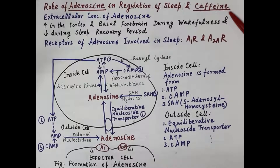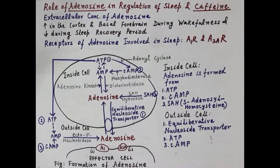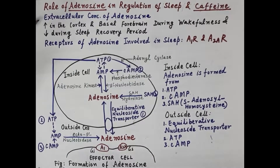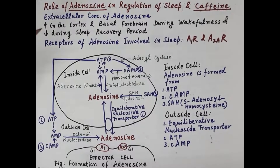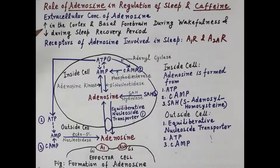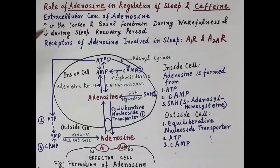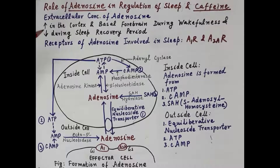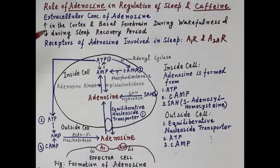We'll discuss how adenosine induces sleep and how caffeine induces wakefulness and mental alertness. The extracellular concentration of adenosine increases in the cortex and basal forebrain during wakefulness. As the duration of wakefulness increases, there is a further rise in the level of adenosine.